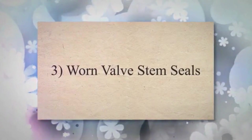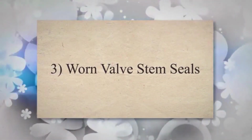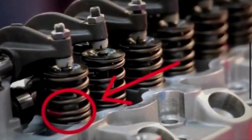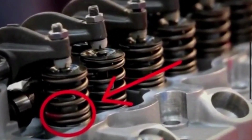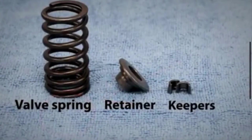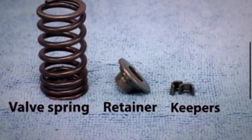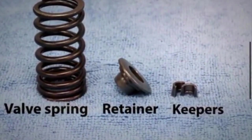3. Worn valve stem seals. Valve stem seals are small components that prevent oil from the cylinder head from seeping down the valve stems into the combustion chamber. When these seals wear out or become damaged, they can allow oil to leak onto the spark plugs.